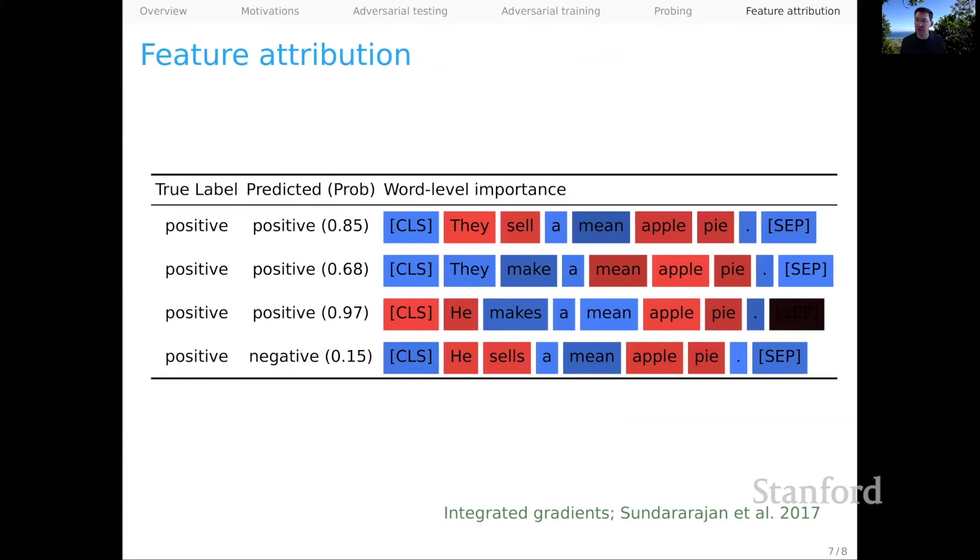And then we'll finally talk about feature attribution, which is one step further in this more introspective mode, because here, as you'll see, I think we can get a really deep picture at how individual features and representations are directly related to the model's predictions. And what I've done here is use the integrated gradients model, which is the model that we'll focus on. I ran it on a sentiment model, and you can see here we have the true label, the predicted label with the probability. And then we have word level importances as measured by integrated gradients, where blue means it's a bias toward positive predictions, and red means it's a bias toward negative predictions.